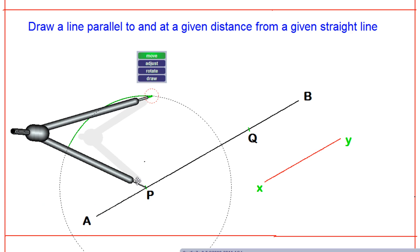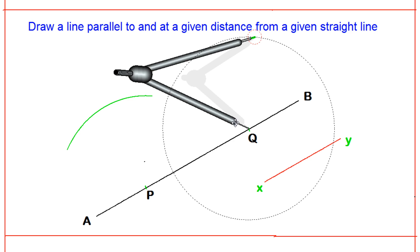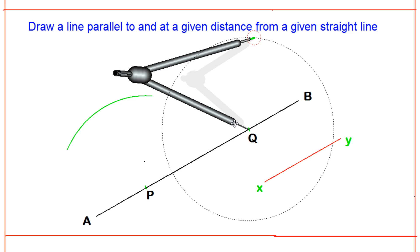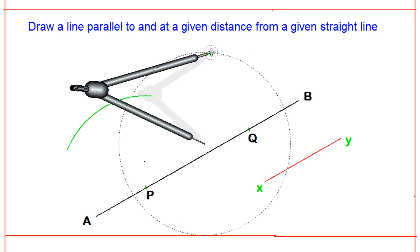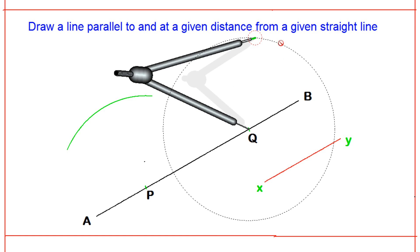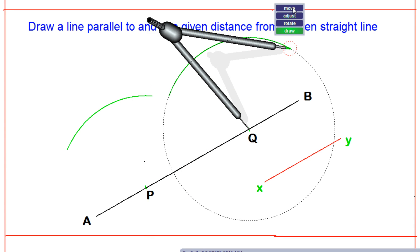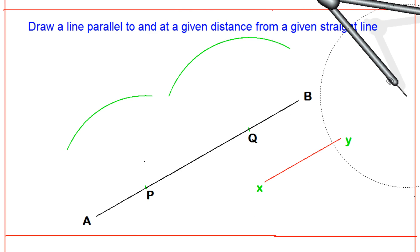And the same way with the same radius from the point Q, you draw another arc on the same side. So I have adjusted at point Q, and now I will draw the arc on the same side of PQ. Now take off the compass.